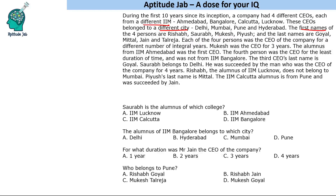They have different first names, different last names, and they were CEO for a different number of years. This is a grid problem — we have to make a grid. The most important thing in solving such questions is deciding what should be the first column or row. Should we start from first name, city, IIM, or number of years?